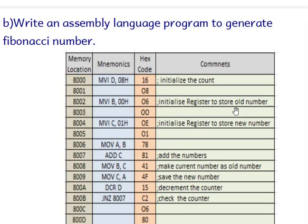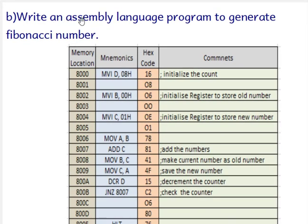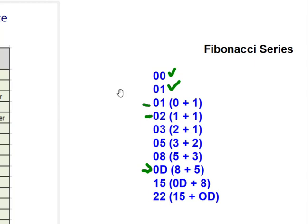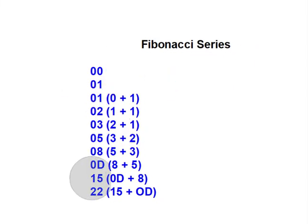Welcome to the 8085 programming series. In this session we will write an assembly language program to generate Fibonacci numbers. In the Fibonacci series, the first number is zero and the next is one. To get the third number we add the first and second; to get the fourth number we add the second and third.